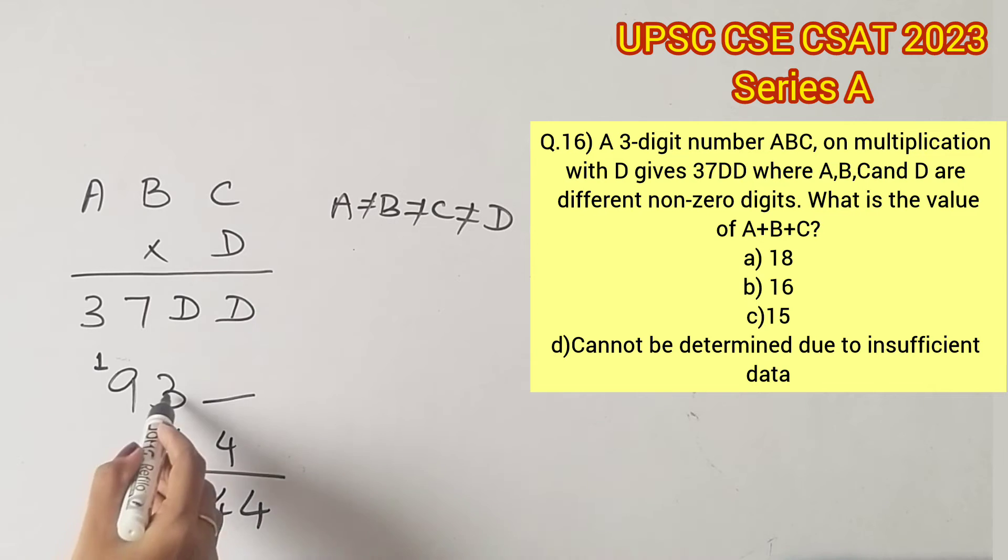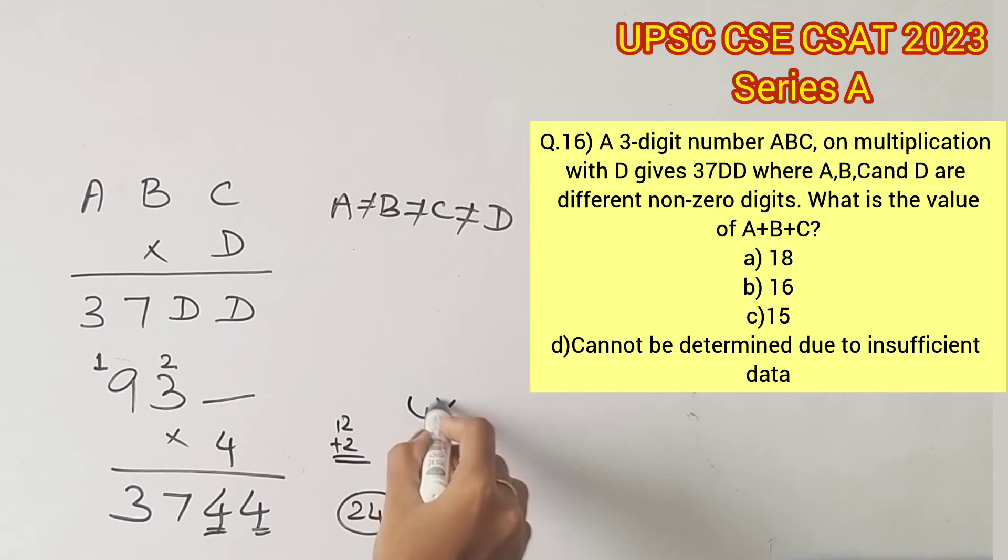We know that 4 threes are 12, but we need a 2 carried over here because the tens place is occupied by a 4. So it's evident that we need a carry-over of 2 here. Now the units place is occupied by a 4 and there is a carry-over of 2. So we need a digit which when multiplied with 4 gives us a value of 24, which is easy because 4 sixes are 24. Therefore the last digit has to be occupied by a 6.